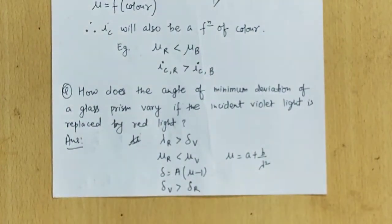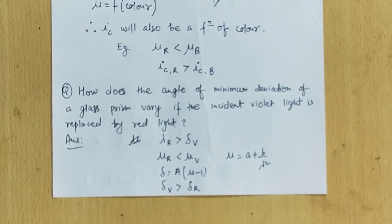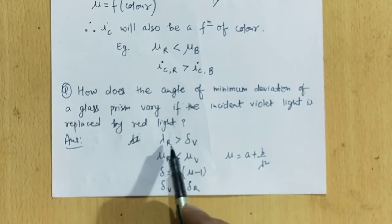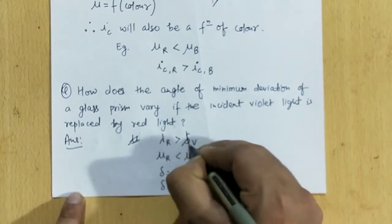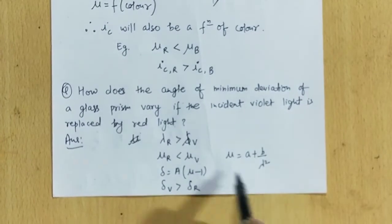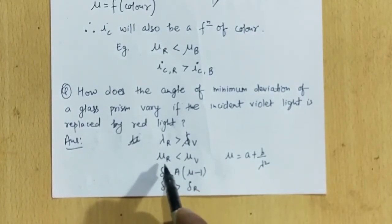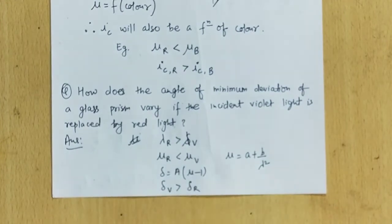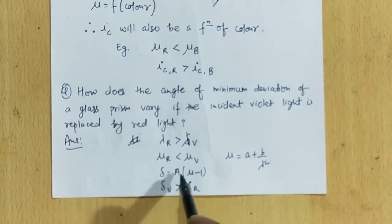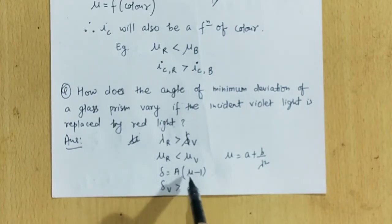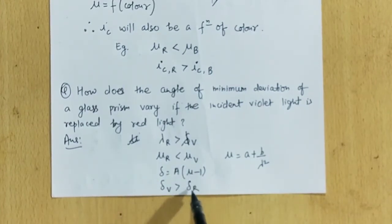Question 2: How does the angle of minimum deviation of a glass prism change if incident violet light is replaced by red light? Since λ of red is greater than λ of violet, by Cauchy's theorem μ of red is less than μ of violet. Using the thin prism deviation formula δ = A(μ − 1), since μ of violet is more than μ of red, the deviation of violet is more than the deviation of red. So the angle of minimum deviation will decrease when violet is replaced by red.